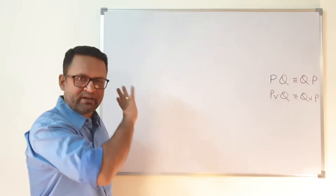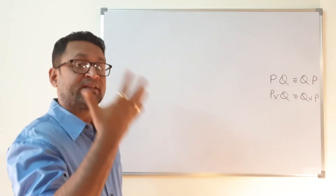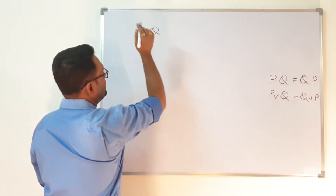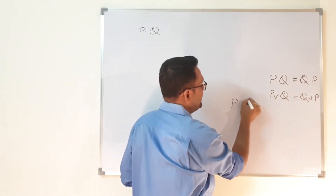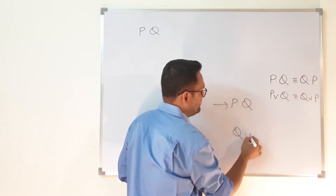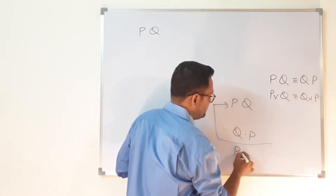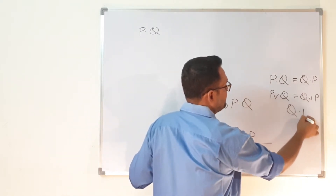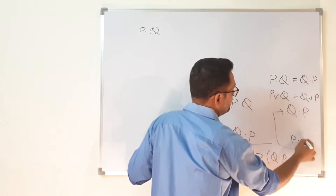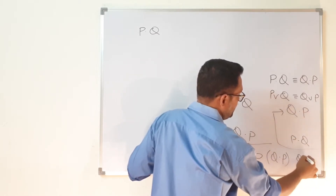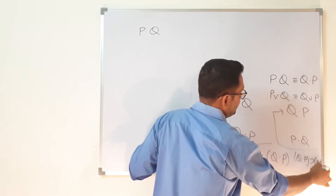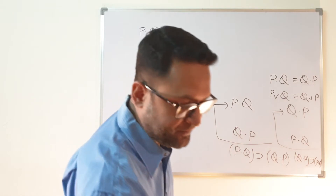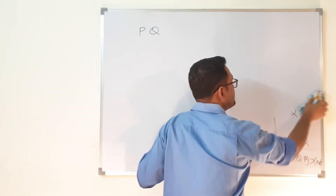So how do we solve it? The idea is that we take P·Q as an assumption and reach Q·P, giving us P·Q ⊃ Q·P. Then we take Q·P as an assumption and reach P·Q, giving us Q·P ⊃ P·Q. Once we conjoin these two conditionals, we get the biconditional — that is the overall strategy.